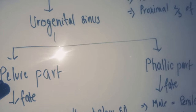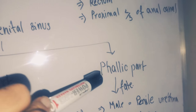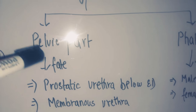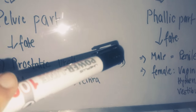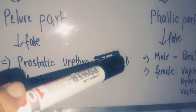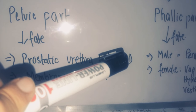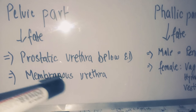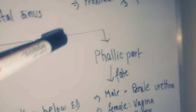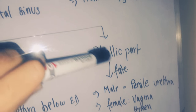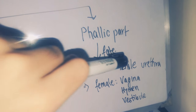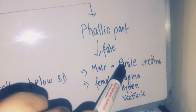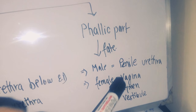The urogenital sinus develops into a pelvic part and a phallic part. The pelvic part develops into the prostatic part of the urethra below the ejaculatory duct and the membranous urethra. The phallic part develops into the penile urethra in the male.